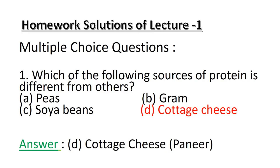Multiple Choice Questions, Question No. 1: Which of the following sources of protein is different from others? Option A: Peas. Option B: Gram. Option C: Soya Beans. Option D: Cottage Cheese. If you read carefully all these 4 options, you can very easily figure out that peas, gram, or soya beans are the sources of protein having plant origin. However, cottage cheese is a source of protein which is extracted from animals. This makes Option D, Cottage Cheese, the different source of protein.